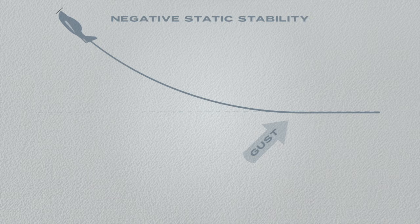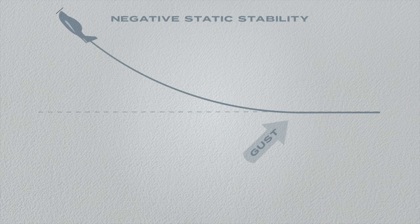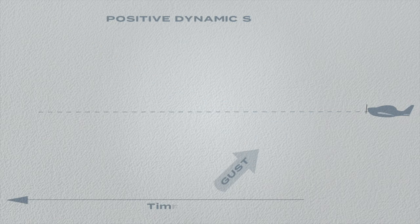Whereas static stability describes the initial tendency of the aeroplane to return to its original attitude, dynamic stability describes the time and how many oscillations it takes to get there.